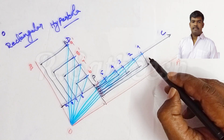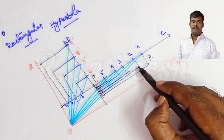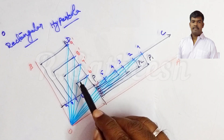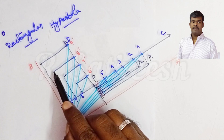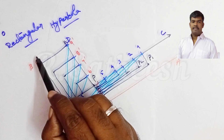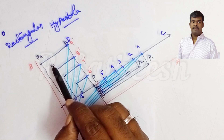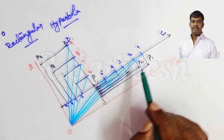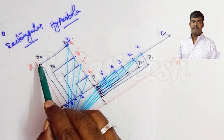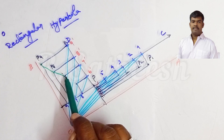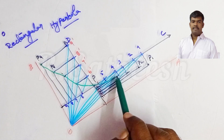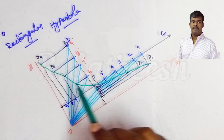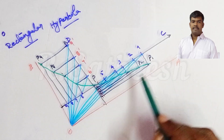Where the lines from point 1 and 1-dash intersect, that gives point P1. Similarly, 2 and 2-dash give P2, giving P3, P4, P5, then P (original), P6, P7, P8, P9. Now join all the points P1 through P9 passing through P.